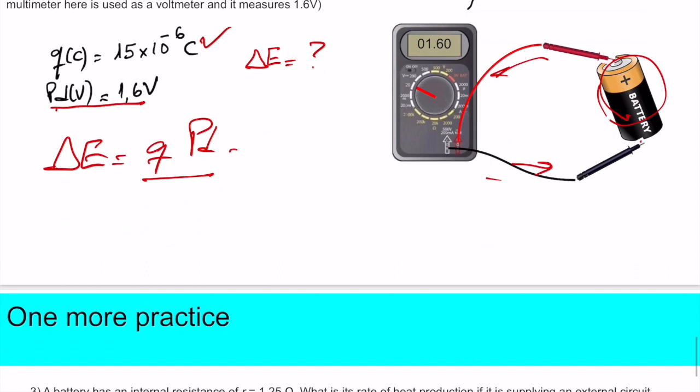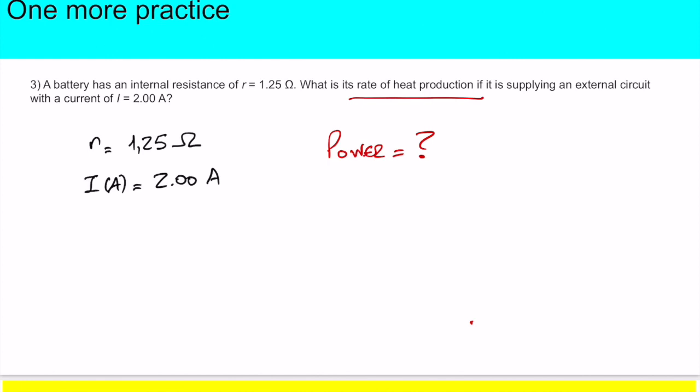One more practice. A battery has an internal resistance of 1.25 ohms and supplies a current of 2 amps. What is the rate of heat production? The rate of heat production is the power. We saw several formulas for power, but the one we apply for internal resistance is I squared times R. So in this case it's 2.00 amps squared times 1.25, which equals 5 watts. Simple equations, simple problems.